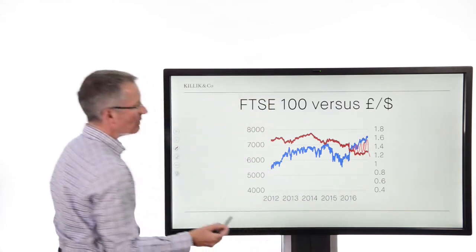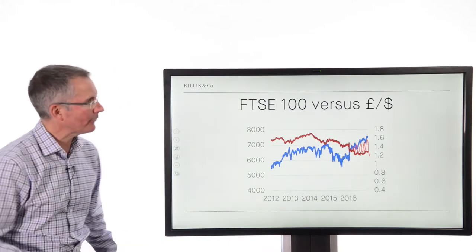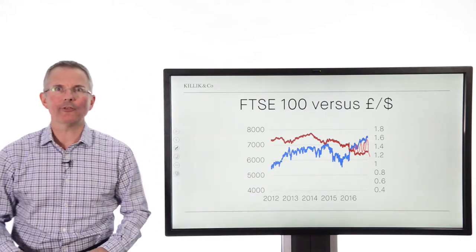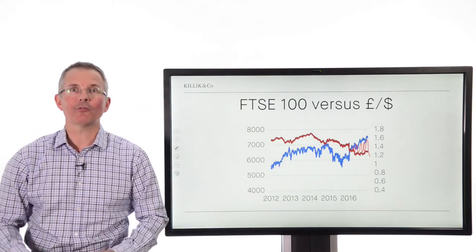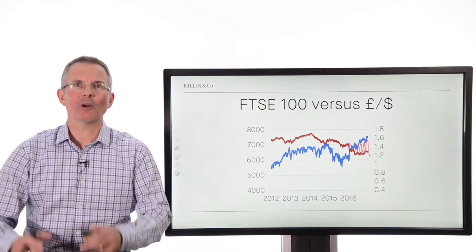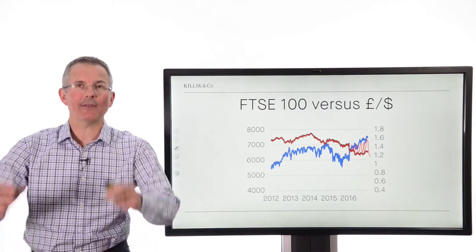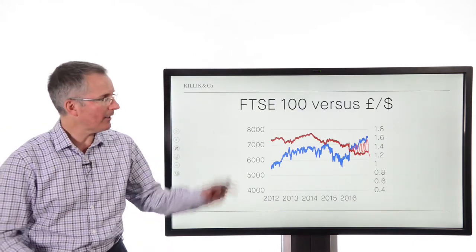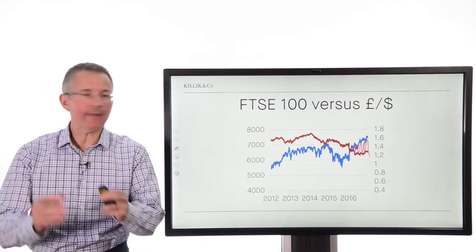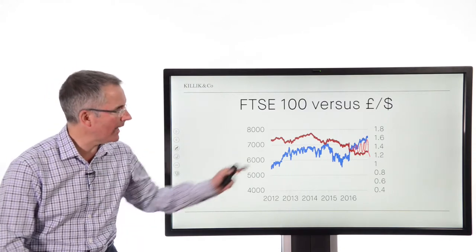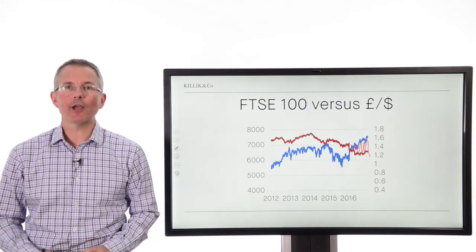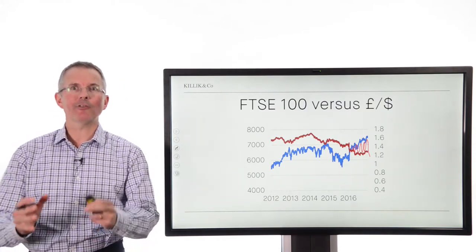As the pound has dropped — and it's dropped for a number of reasons: we have the Brexit referendum result, we have the election of Donald Trump in the US, we've had the snap election here — that's tended to push the pound down. You can see the blue line is basically the stock market rising, defined as the FTSE 100.